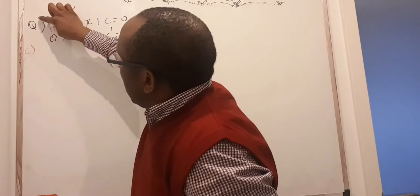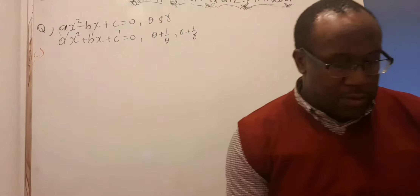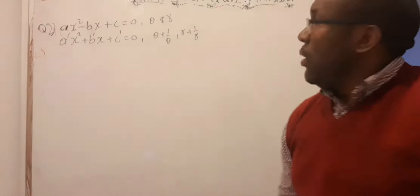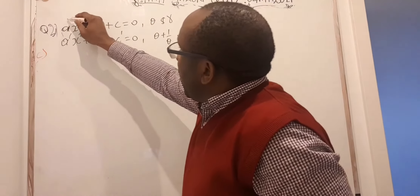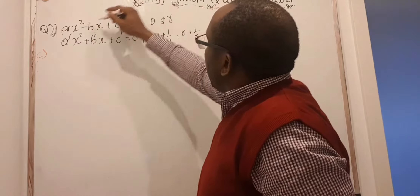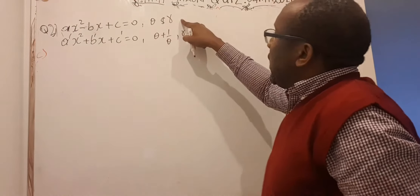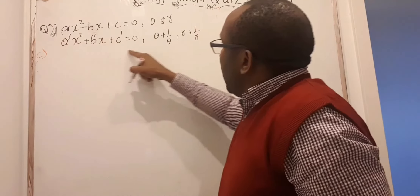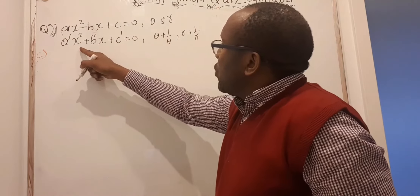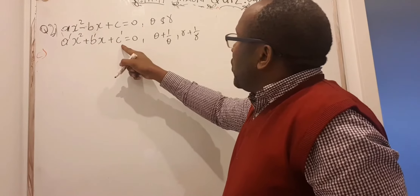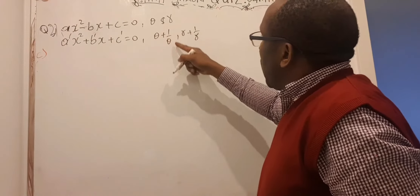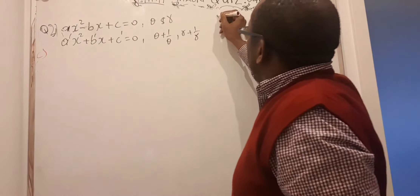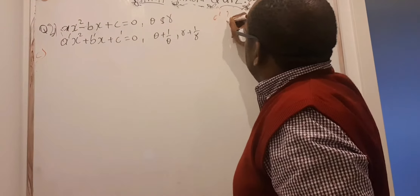For question number 2, you were given an equation that had roots θ and γ. Then you were told to find c' in another equation a'x² + b'x + c' = 0, which had roots θ + 1/θ and γ + 1/γ. That was the question — we're supposed to find c'.